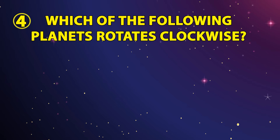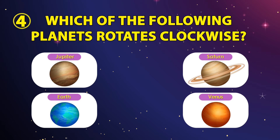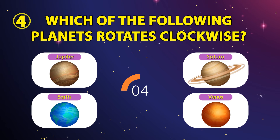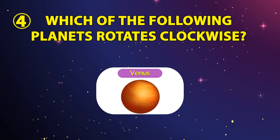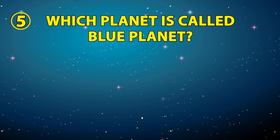Number four: which of the following planets rotates clockwise? The options are Jupiter, Saturn, Earth, or Venus. The correct answer is Venus.